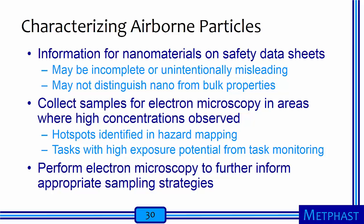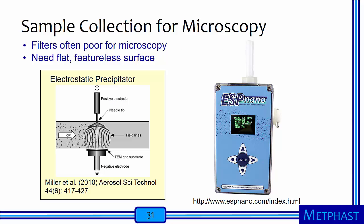Further characterization of airborne particles is often warranted. Information for nanomaterials on safety data sheets is often incomplete or unintentionally misleading, and the information provided may not distinguish nano from bulk properties. We advise collecting samples for electron microscopy in areas where high concentrations are observed during hazard mapping — we call these areas hot spots — or for tasks with high exposure potential identified through task monitoring. Electron microscopy can help inform appropriate sampling strategies.